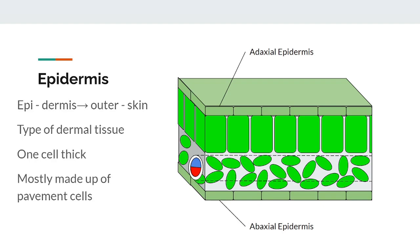Next we can add the bread to our leaf sandwich, which is the epidermis. The word epidermis can be broken down into 'epi' meaning outer and 'dermis' meaning skin, combining to make 'outer skin'. It is present on both the adaxial and abaxial sides of the leaf. The purpose of the epidermis is to protect the plant from infection and water loss, as well as to regulate gas exchange between the inside of the leaf and the outside world. The epidermis is a type of dermal tissue, is usually a single cell thick, and is composed of a few different types of cells. The majority of the cells in the epidermis are called pavement cells, which help protect everything underneath.